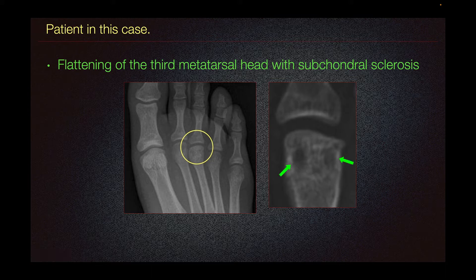Osteochondrosis of the metatarsal head may be a result of a traumatic insult, either in the form of acute or repetitive injury and vascular compromise. If there is concern for an infection, we look for any signs of periosteal reaction or any lytic changes.